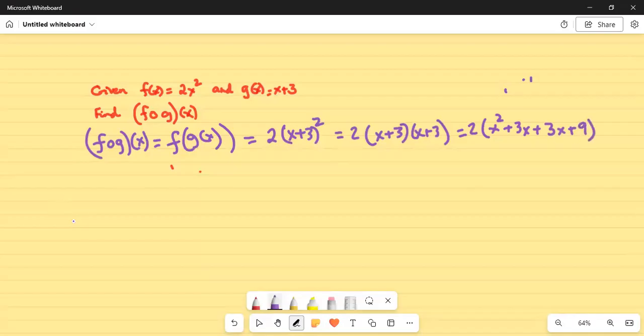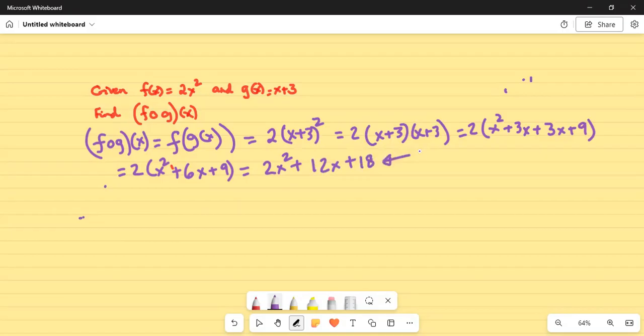So this reduces to 2(x² + 6x + 9). And if I distribute the 2—that is, multiply each term inside the parenthesis by 2—I get 2x² + 12x + 18. This is the final answer.